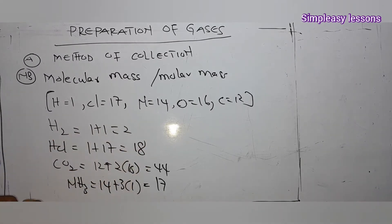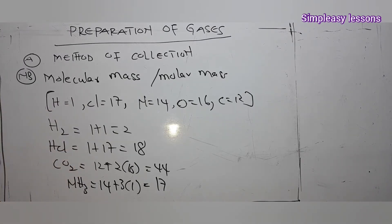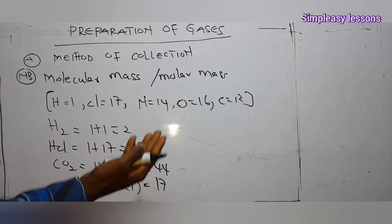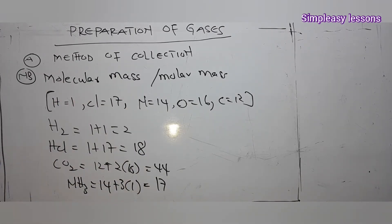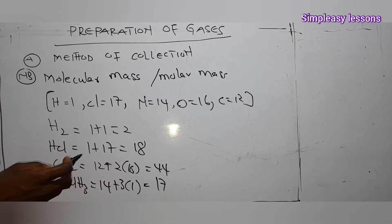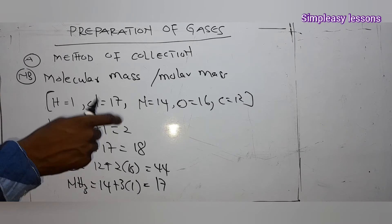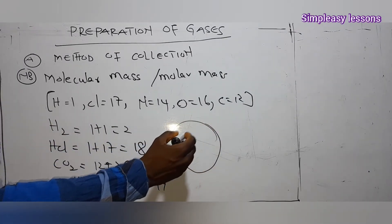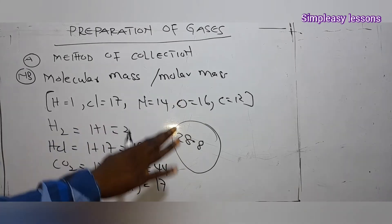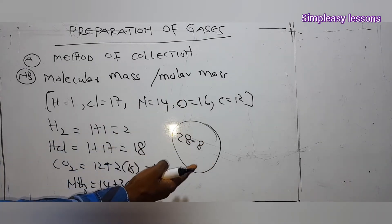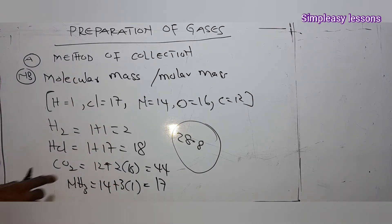Now let me introduce you to the various types of collection of gases. We can have downward delivery, which is upward displacement of air, and we also have upward delivery, which is downward displacement of air. The molar mass of air is 28.8. If the molar mass is greater than 28.8, the gas is heavier than air. If it is less than 28.8, it is lighter than air.